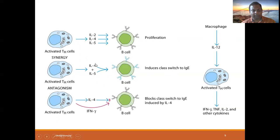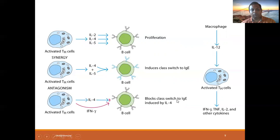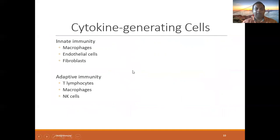Synergism induces class switching. For immunoglobulin-E formation, initially IgM forms, but with the presence of interleukins, class switching occurs to form IgG. Interleukin-5 leads to IgE formation. Here is an example of antagonism: an activated TH cell with interleukin-4, as shown, but interferon-gamma blocks the class switch to IgE induced by interleukin-4.